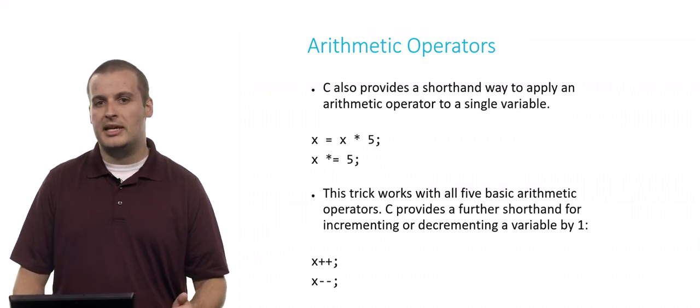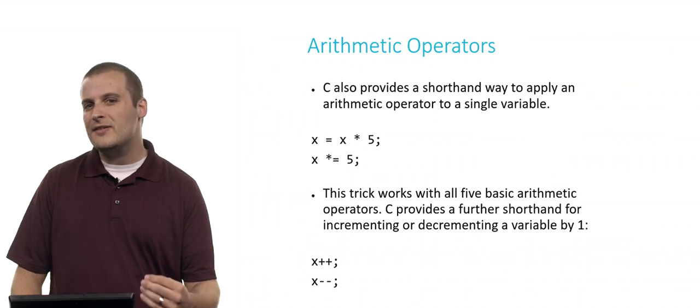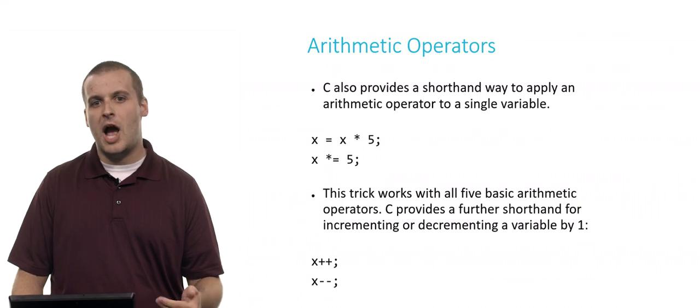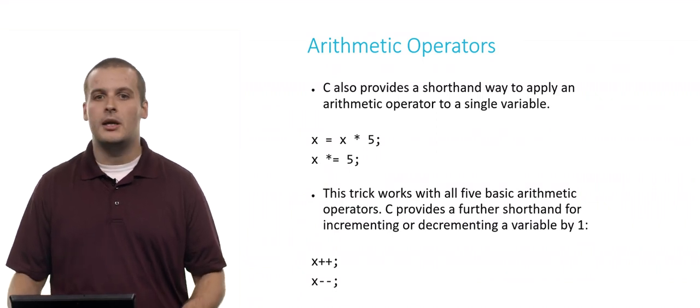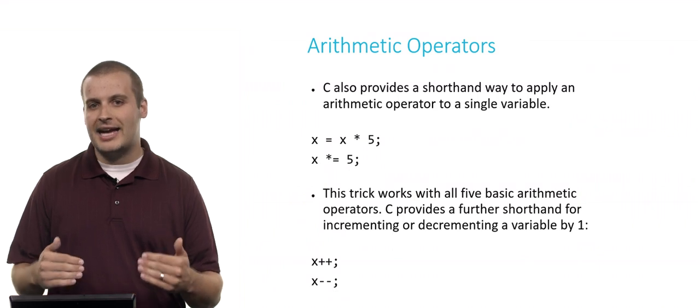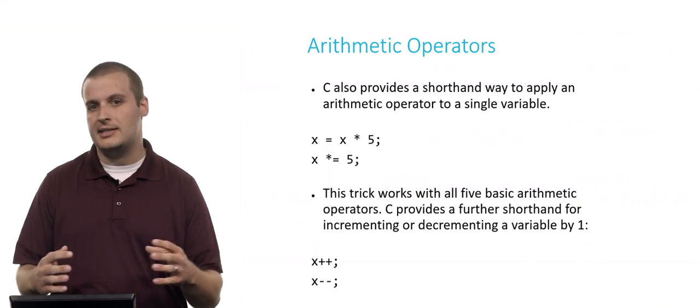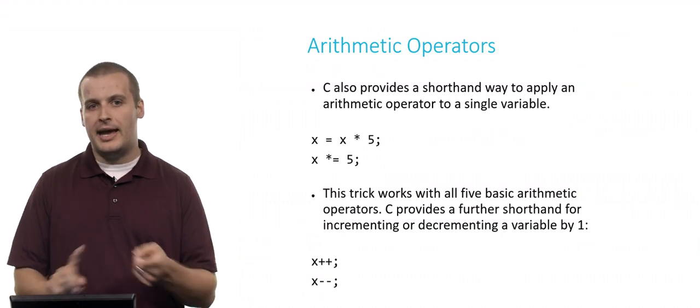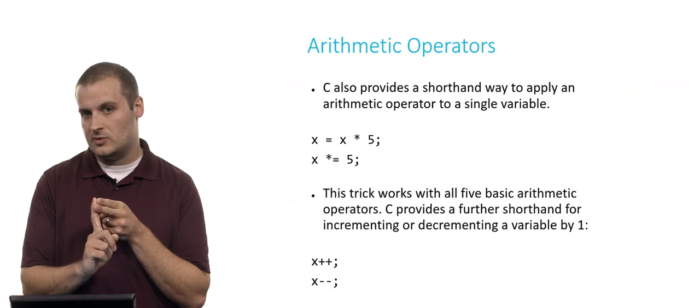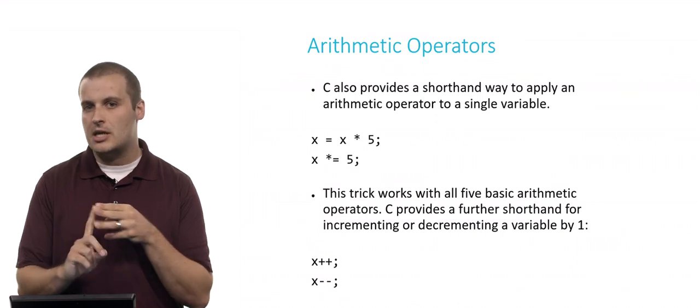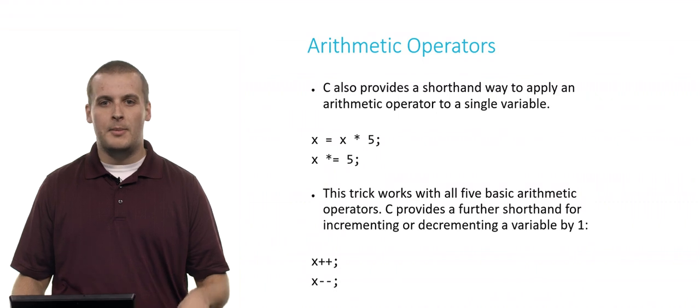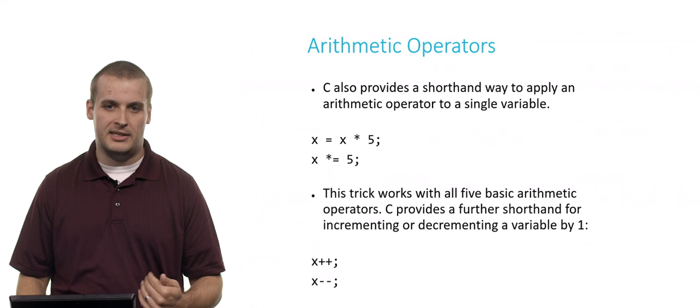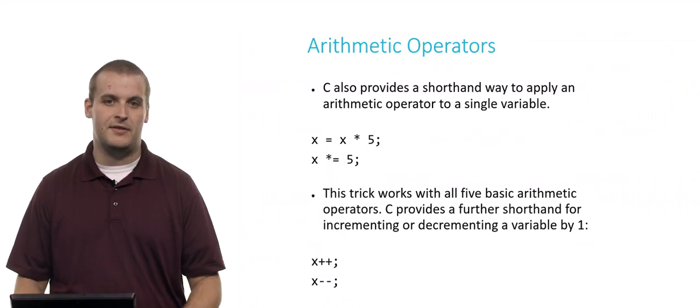There's also something that's so common in C that we've decided to refine that even further. Incrementing a variable by 1 or decrementing a variable by 1 is such a common thing, especially when we talk about loops a little later on, that we've decided that instead of saying something like x plus equals 1 or x equals x plus 1, we've even shorthanded that to x plus plus. So x equals x plus 1, x plus equals 1, and x plus plus all do the same thing. They all increment x by 1. But that incrementing and decrementing by 1 is so common that we have plus plus and minus minus that allow us to shorthand that even further.